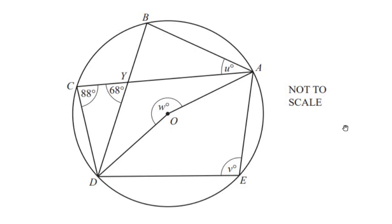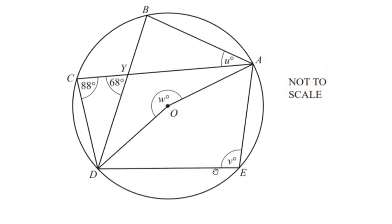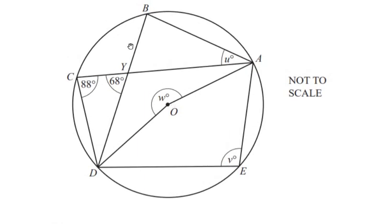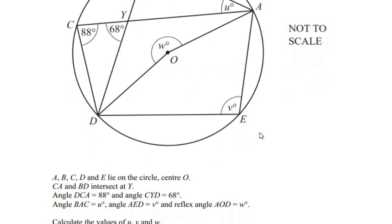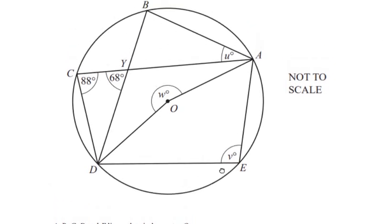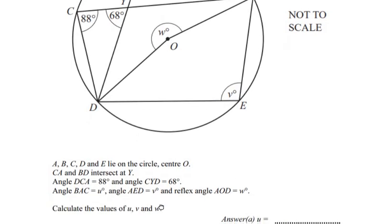Hello and welcome to my channel. In this video we are going to solve an example on circle theorems. Points A, B, C, D and E lie on the circle with center O. C-A and B-D intersect at Y. Angle DCA is given as 88 degrees, angle CYD is given as 68 degrees, angle BAC is u degrees, angle AED is v, and the reflex angle AOD is w.